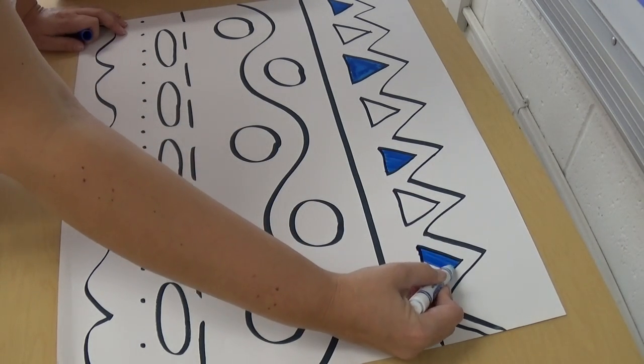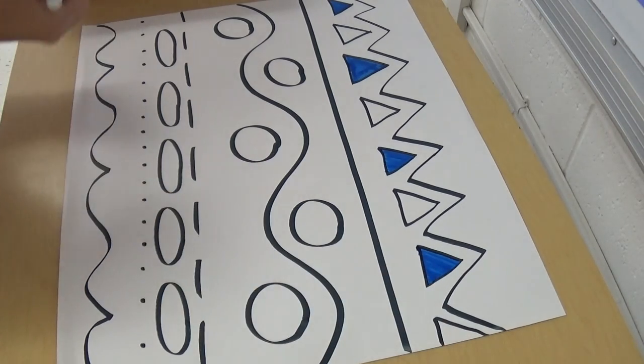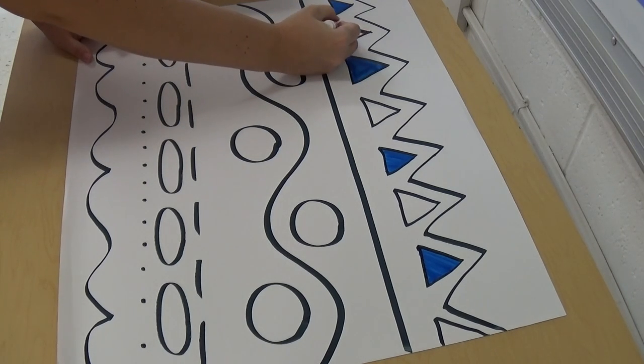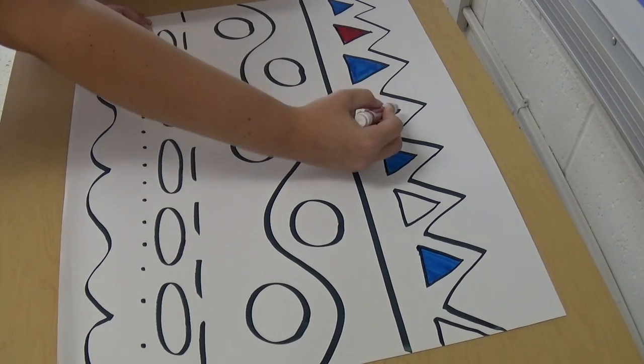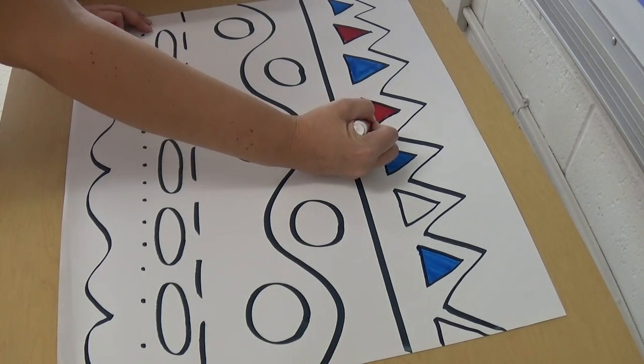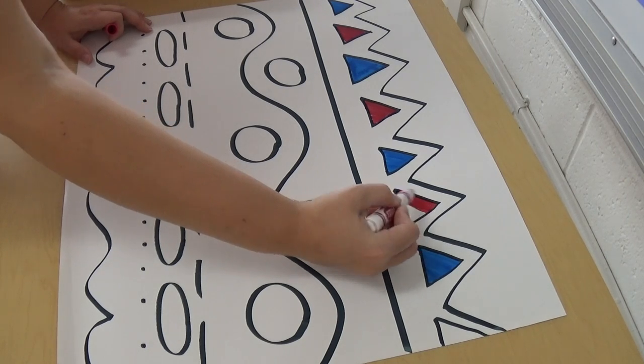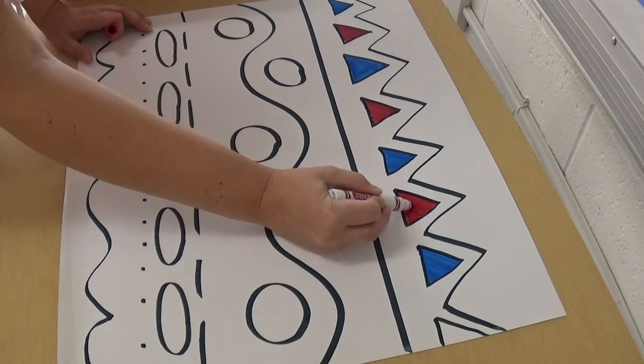You can go ahead and color in all of your shapes, friends. Color in all of your shapes, whatever color you want. You can leave your lines just the way they are and color in all your shapes. Take your time coloring them in carefully.